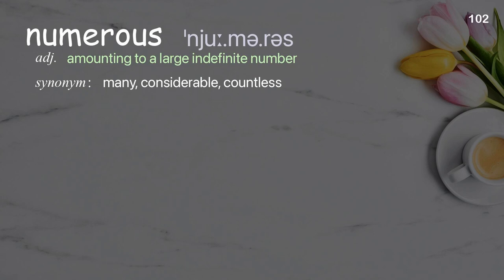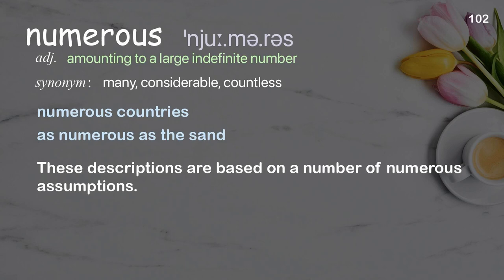Numerous: Amounting to a large indefinite number. Examples: numerous countries, as numerous as the sand. These descriptions are based on a number of numerous assumptions.